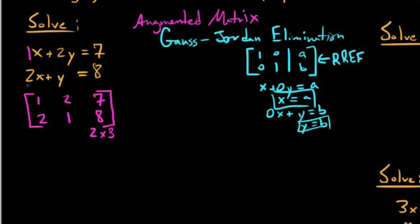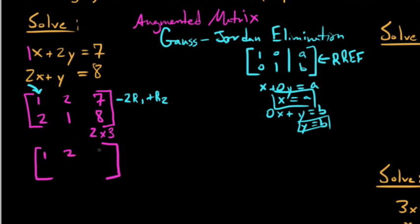Looking at our matrix, we already have a 1 in the top left corner, so we're going to use our elementary row operations to eliminate everything below it and make it 0. We take negative 2 times row 1 and add it to row 2. We did not operate on row 1 — we scalar-multiplied it and added it onto row 2. So automatically the bottom-left entry becomes 0, because negative 2 times 1 is negative 2, and negative 2 plus 2 is 0.